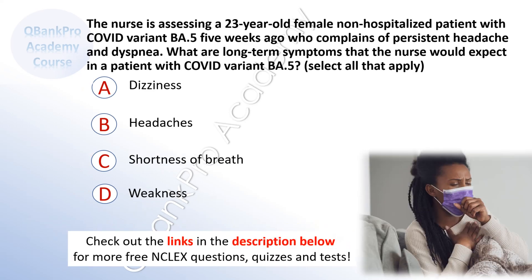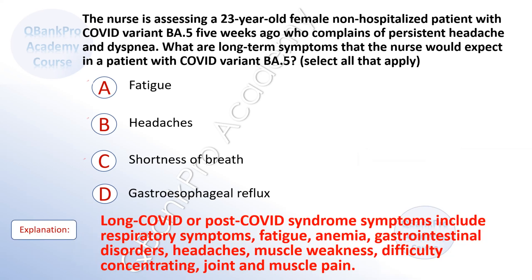The nurse is assessing a 23-year-old female non-hospitalized patient with COVID variant BA5 five weeks ago who complains of persistent headache and dyspnea. What are long-term symptoms that the nurse would expect in a patient with COVID variant BA5? Select all that apply. A. Dizziness. B. Headaches. C. Shortness of breath. D. Weakness. Long COVID or post-COVID symptoms include respiratory symptoms, fatigue, anemia, gastrointestinal disorders, headaches, muscle weakness, difficulty concentrating, and joint and muscle pain.